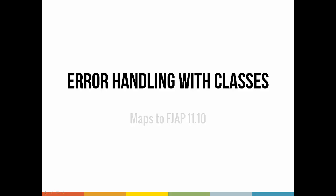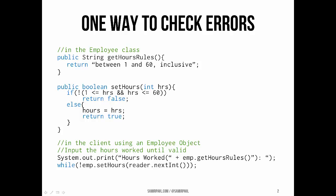A few units ago, we introduced one way of handling possible error conditions in a system using classes and objects. Using that approach, a class's setter method would return a true or false Boolean value, and that Boolean value would tell us whether the operation we were trying to do had been successful or whether some error had happened and the operation had actually failed.